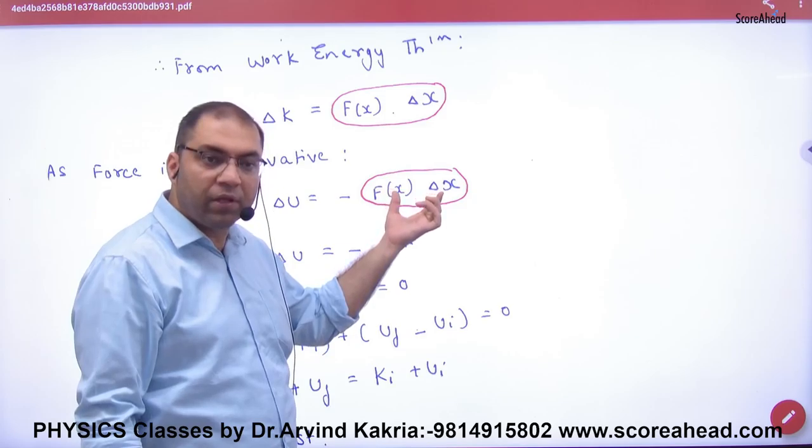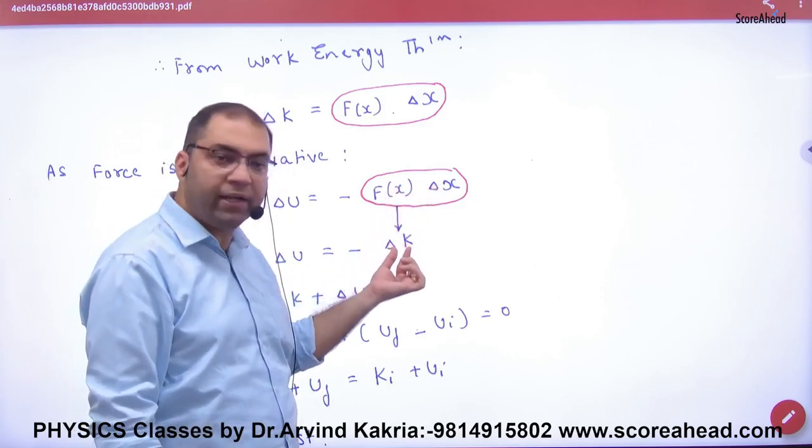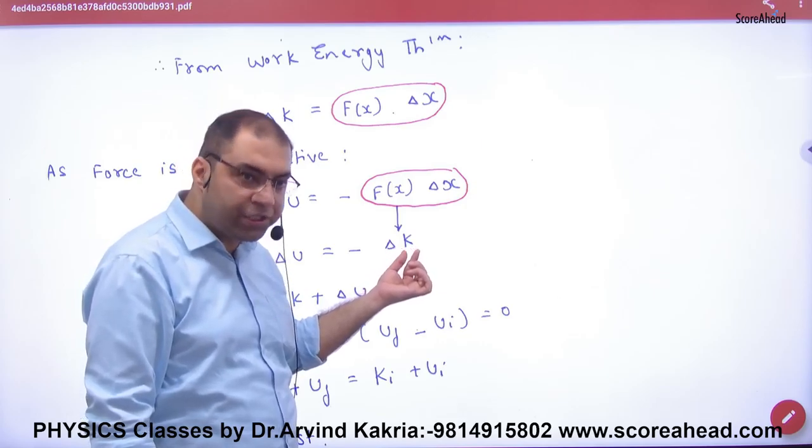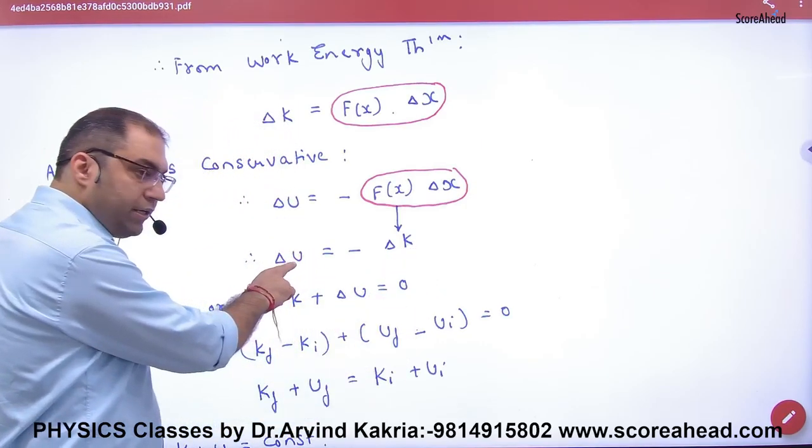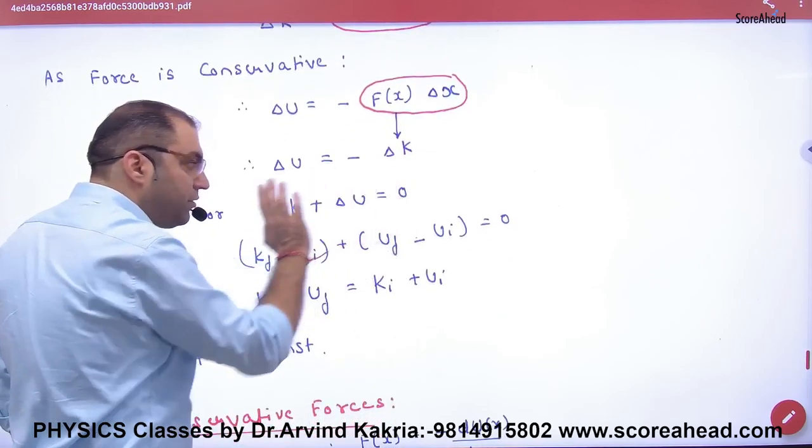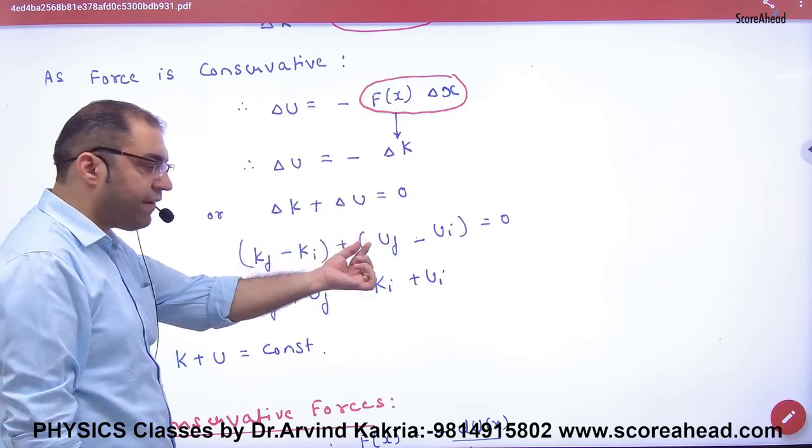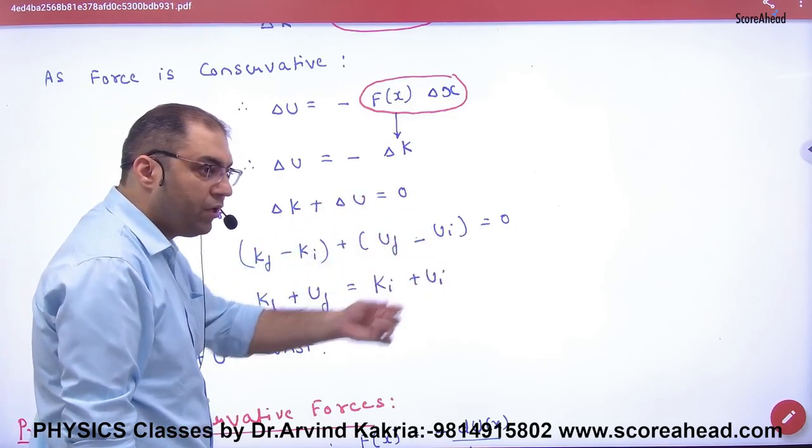Net amount of work done - according to work-energy theorem, net amount of work done is equal to change in kinetic energy. This is work-energy theorem. So ΔU is minus ΔK, and ΔK is here. So this sum of both: ΔK is final kinetic minus initial kinetic. ΔU is final potential minus initial potential.